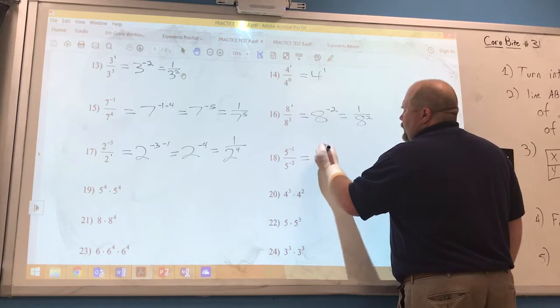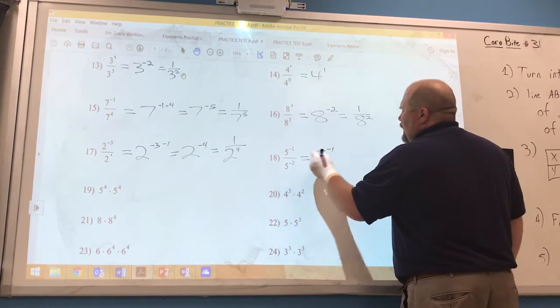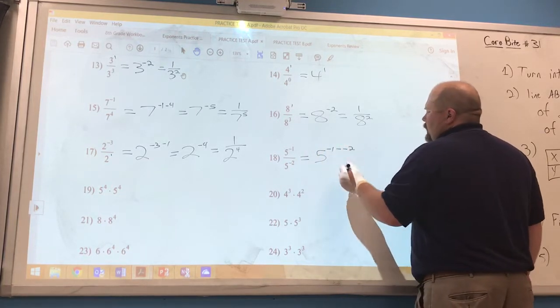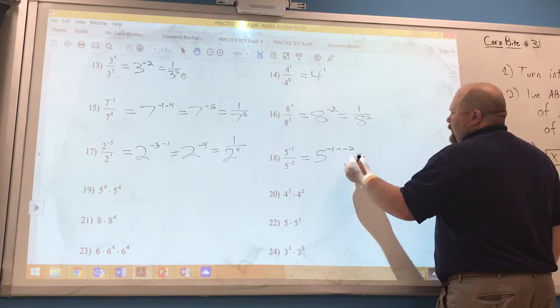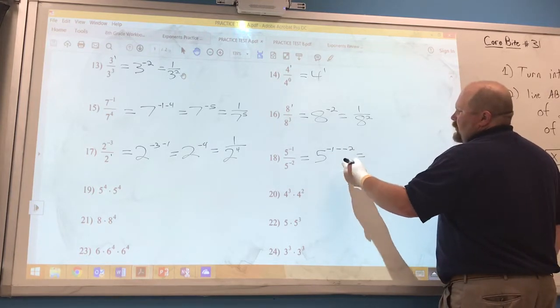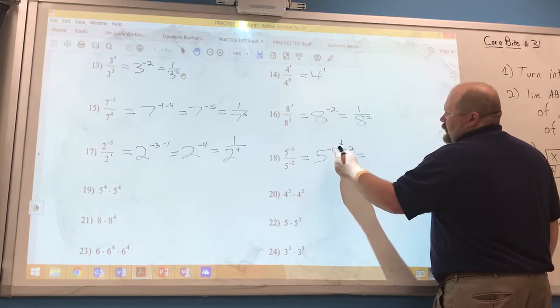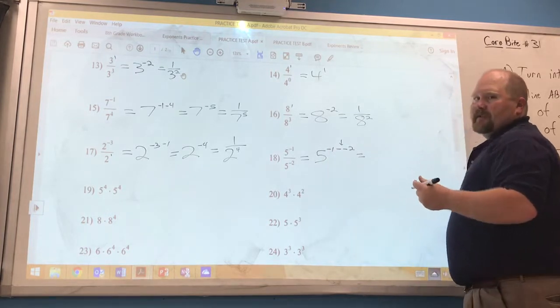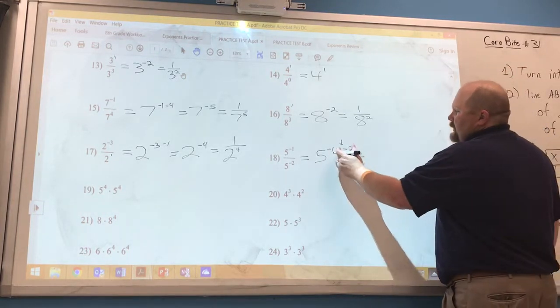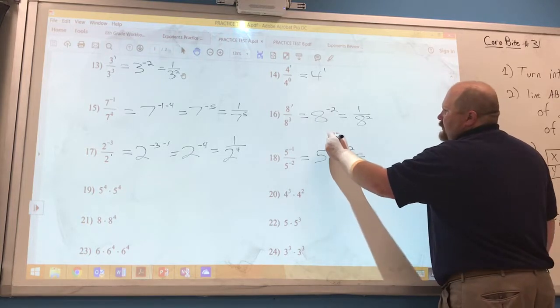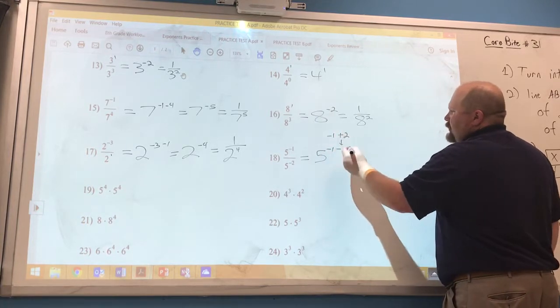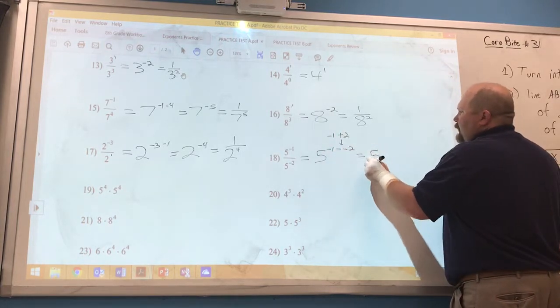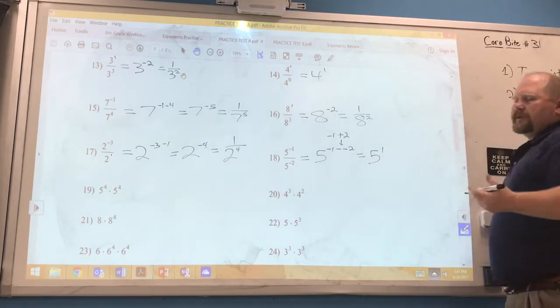18, we've got negative 1 minus a negative 2. A lot going on in this problem right here. A lot of students mess up because of this double negative. This is the key change that many of you talk about. Anytime you have a double negative, it's positive, so we have negative 1 plus 2 is really what's occurring. So we have 5 to the 1st power, or simply 5.